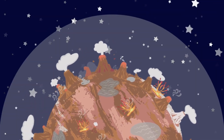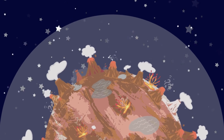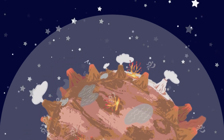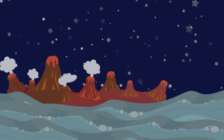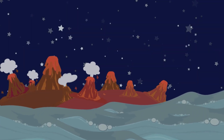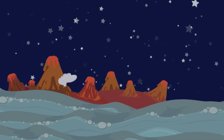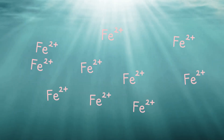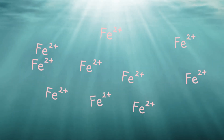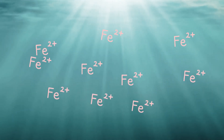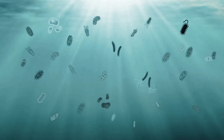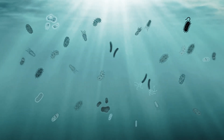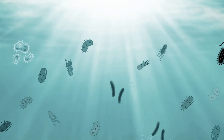Early Earth was a completely different place from what we see today. The atmosphere did not have any oxygen — it was a mix of methane, carbon dioxide, and other volcanic gases. Also, the ocean waters contained a large amount of dissolved iron. Within this no-oxygen environment, the life that existed on Earth was dominated by anaerobic organisms.